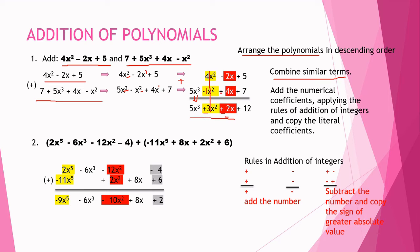For the constants: positive 5 + positive 7 = 12. Therefore, the answer is 5x³ + 3x² + 2x + 12.